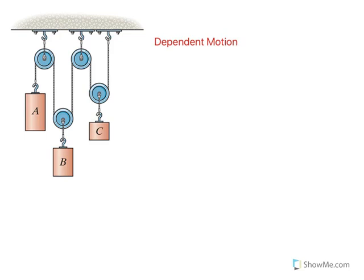Hello, I'm back with a topic known as dependent motion. Dependent motion is when the position of one object depends on the position of other objects. For example, here in this pulley system, if you move A, obviously the position of B and C are going to be altered.